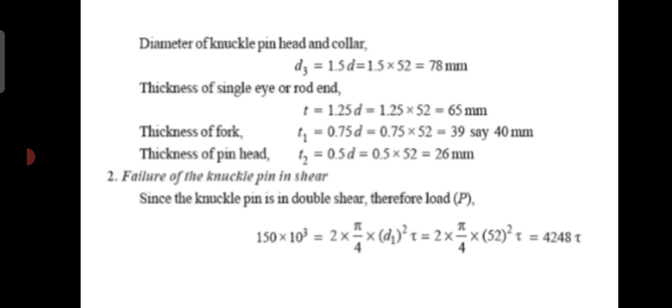Thickness of single eye or rod end: small t equal to 1.25d. Substituting d equal to 52 gives t equal to 65 mm. Thickness of fork: small t1 equal to 0.75d. Substituting gives 39, so t1 equal to 40 mm. Thickness of pin head: t2 equal to 0.5d, that means 0.5 × 52 equal to 26 mm.